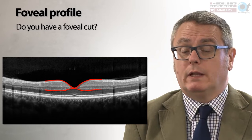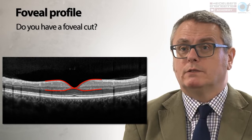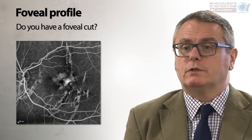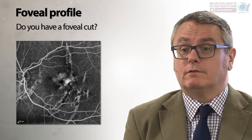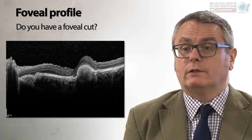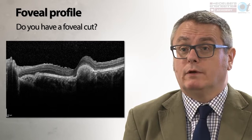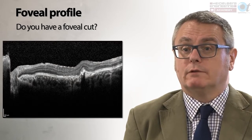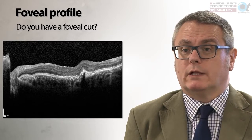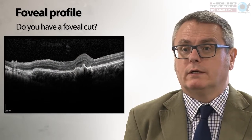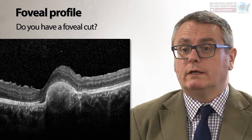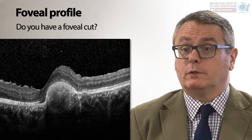Have you been able to identify the fovea on your scans? Look for the position of the retinal nerve fibre layer and the outer plexiform layer — they appear to meet at the fovea, confirming a foveal cross-section. When the scan position is moved superior or inferior to the fovea, the retinal nerve fibre layer and outer plexiform layer appear continuous across the length of the scan rather than converging. Returning to the central fovea, those layers meet again, confirming a foveal cross-section.